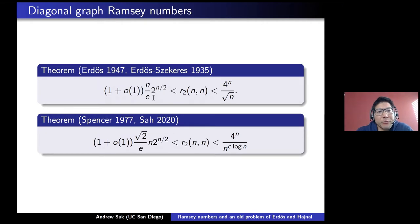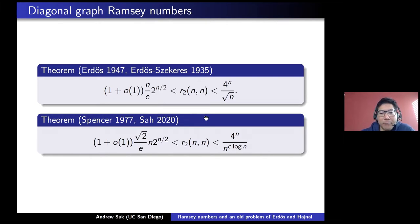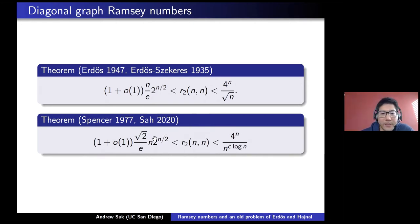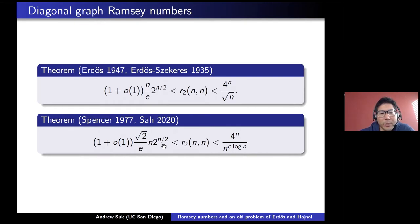It's a famous result of Erdős using the probabilistic method back in 1947 that shows a lower bound for the diagonal Ramsey number. As of today, the best known bounds are: the lower bound due to Spencer and the upper bound improved somewhat recently by Sah. So it's still somewhere roughly between 2^(N/2) and 4^N.